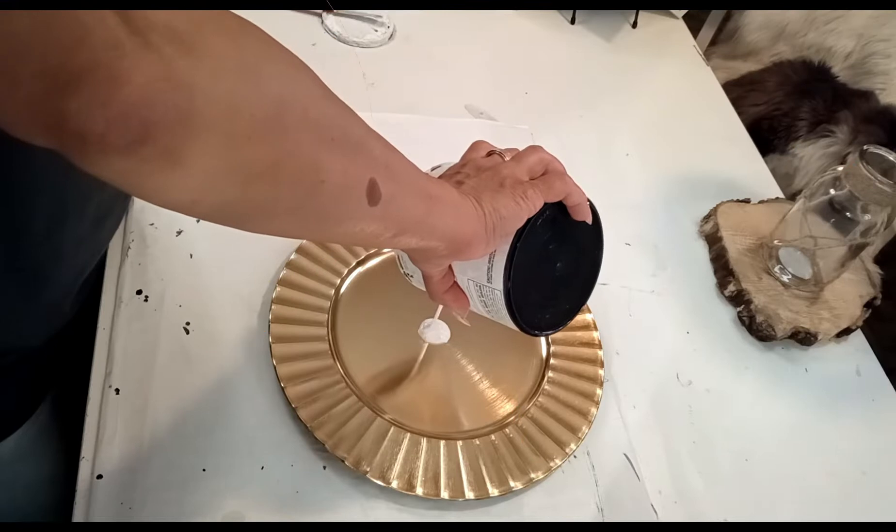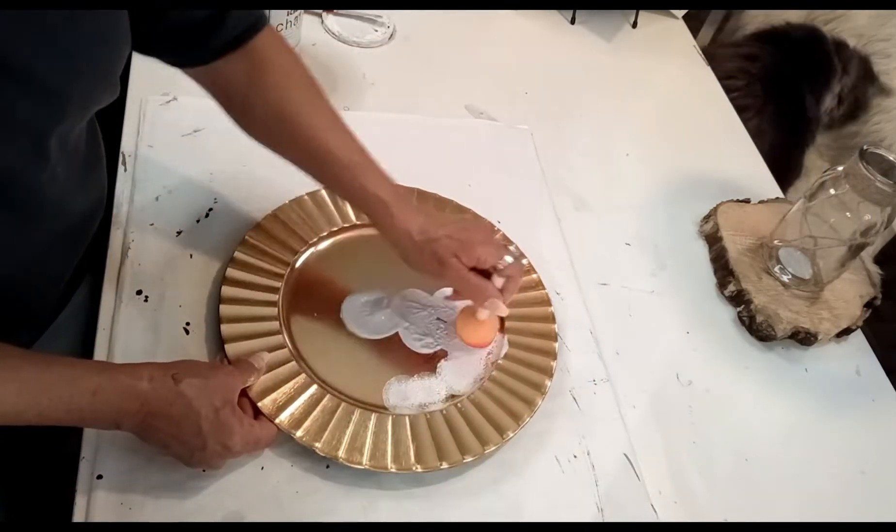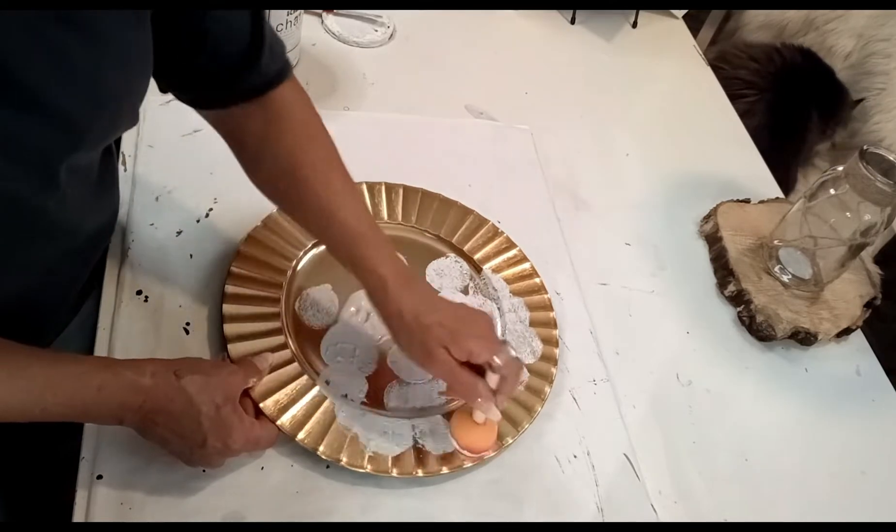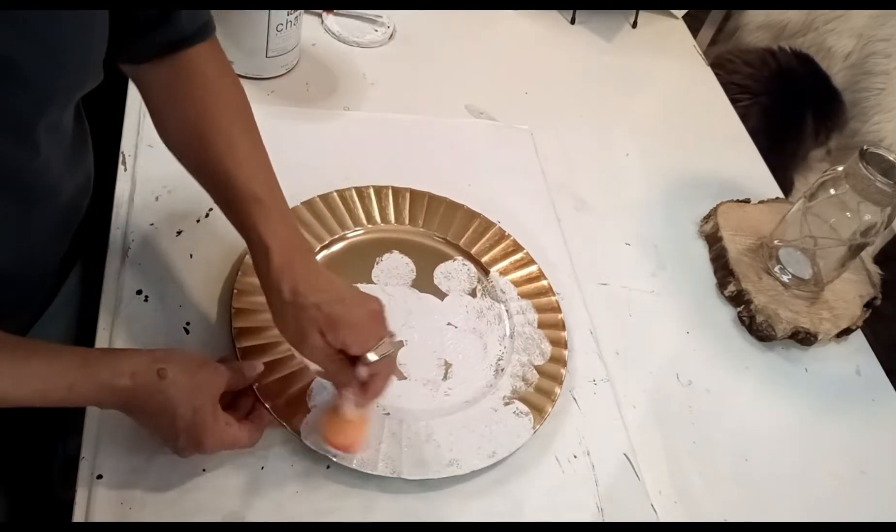Hello, welcome to my channel. My name is Aurea and this is DIY with Aurea. I have this gold plate from Dollar Tree that I'm going to be giving three coats of this white chalk paint.